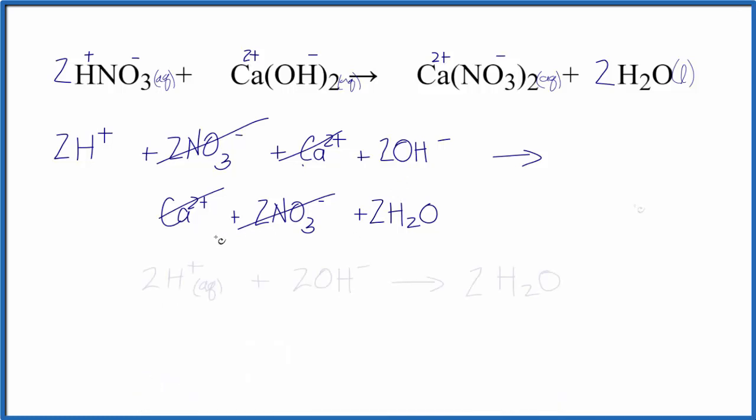And that'll look like this. We could further simplify this by removing the two since they're the same for each coefficient. And that would be the net ionic equation for the neutralization reaction of nitric acid with calcium hydroxide. This is Dr. B, and thanks for watchin'.